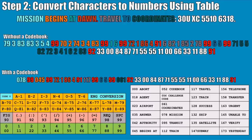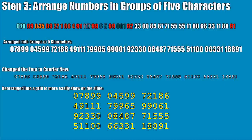The next step is to stay organized and arrange the numbers in groups of five characters. This is very common for any cryptographic method. All you're doing is squishing all the numbers together and then separating them into groups of five. So instead of having '078 space 99', it becomes '07899', '04599', and so on. The slightest error can mean your entire message gets turned into gibberish.